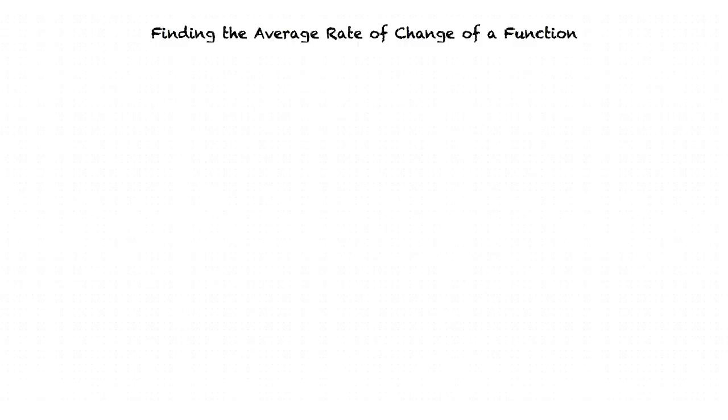In this video we will cover the topic of finding the average rate of change of a function. In these types of problems we are given a function f of x and two x values. We are then asked to find the average rate of change from one point to the other. Let's take a look at our example problem.